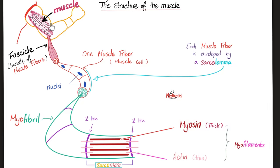Here is your muscle. Each muscle is made of fascicles — bundles of muscle fibers. Each bundle contains individual muscle fibers. Each muscle fiber of skeletal muscles has many nuclei; it's multinucleated. Each muscle fiber is made of myofibrils and each myofibril is divided by Z lines into sarcomeres.